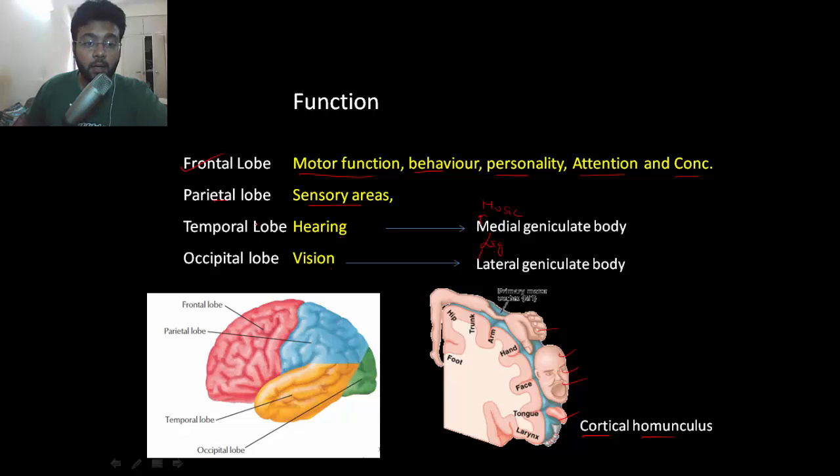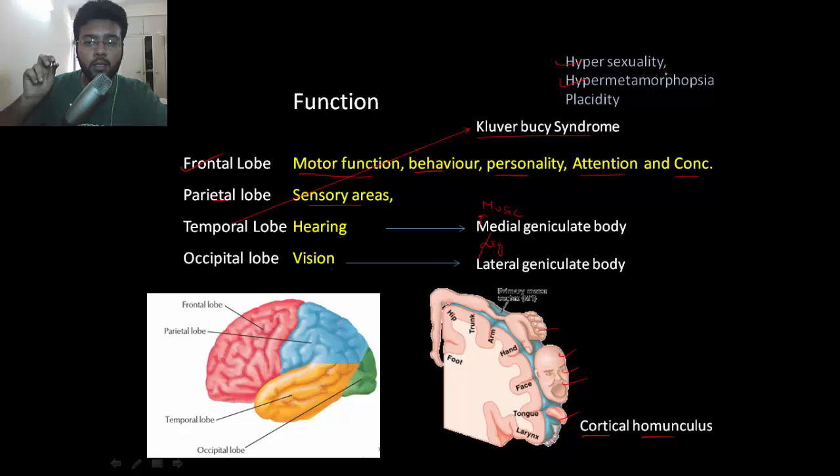Now, what if you remove the temporal lobe from a monkey? That will result in what is called Kluver-Bucy syndrome, characterized by hypersexuality in the monkey and hypermetamorphosia - even a little stimulus will drive that monkey very crazy.